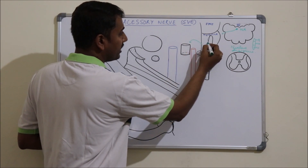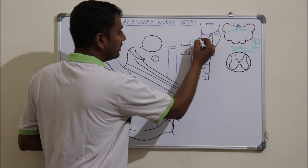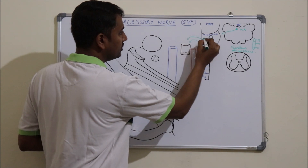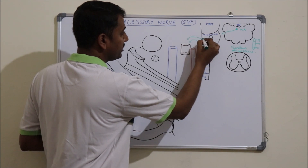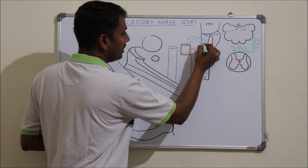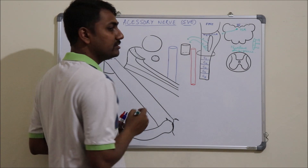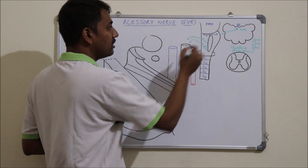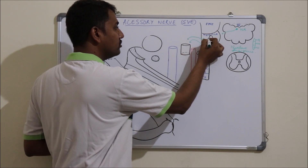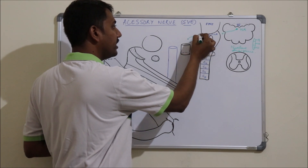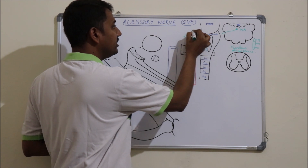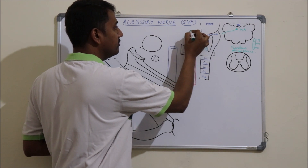From above arises the 10th cranial nerve, and below it the 11th cranial nerve. The upper part of the posterolateral sulcus gives rise to the 9th cranial nerve.